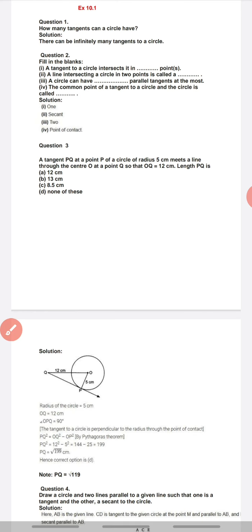Now moving to question number third. A tangent PQ at point P. Aapke paas ek circle hai, neeche solution diya hua hai. A tangent PQ at point P of a circle of radius 5 cm meets a line through the center O at point Q so that OQ is 12 cm. Find length PQ.